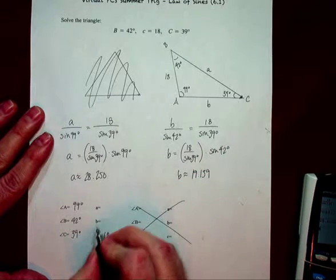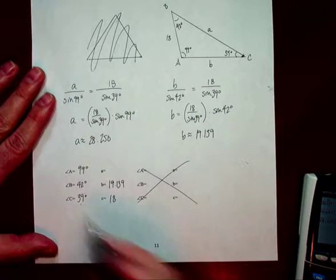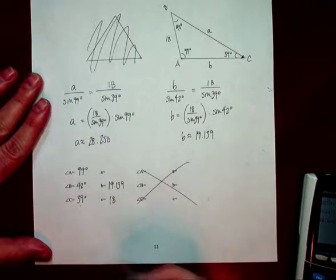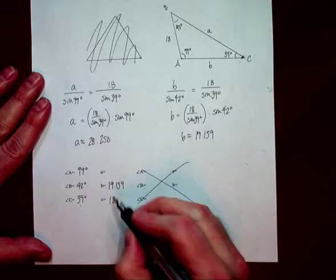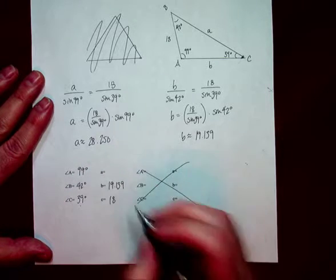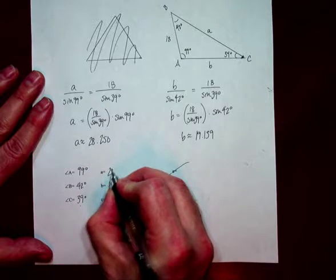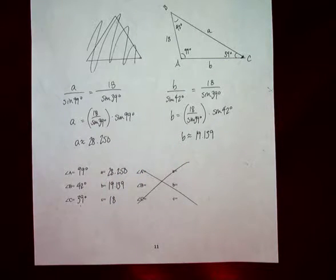of approximately 28.250 and a B value of 19.139. And that makes sense with the value that we already know. 39 and 42 are really close to each other in angle measurement size. And therefore, 18 and 19.139 are pretty close too. But 99 degrees is pretty large compared to those two. And therefore, it will have a significantly larger opposite side being 28.250.